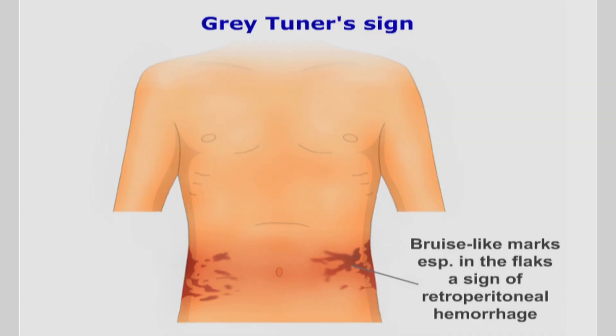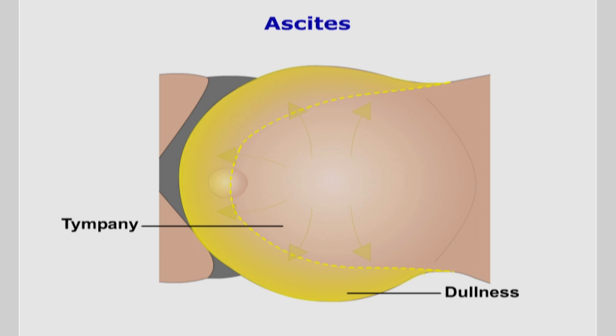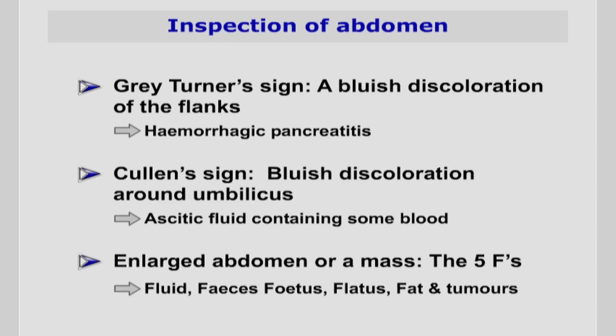Examine the abdomen for Grey-Turner's sign — a bluish discolouration of the flanks as a result of haemorrhagic pancreatitis. Cullen's sign is also a bluish discolouration of the area around the umbilicus, which may be caused by acidic fluid containing some blood. If an area of the abdomen appears enlarged or you find a mass on palpation, think of the five F's: fluid, fetus, faeces, flatus, and fat — but also consider tumours.